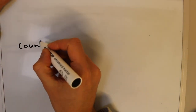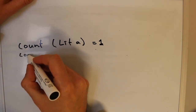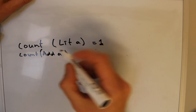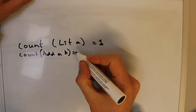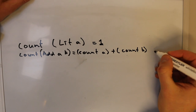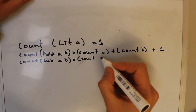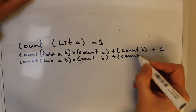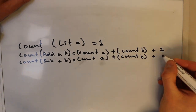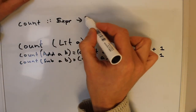We can define this function recursively. For a Lit, the answer is simply one — it's only the Lit, no further recursion. For both of the other two cases, the answer is one plus the number of expressions contained in both sub-expressions. So an Add contains two sub-expressions, and the total count of an Add is the total count in both sub-expressions plus one for the Add itself. The same applies to Sub. Writing this down in Haskell gives us this definition.